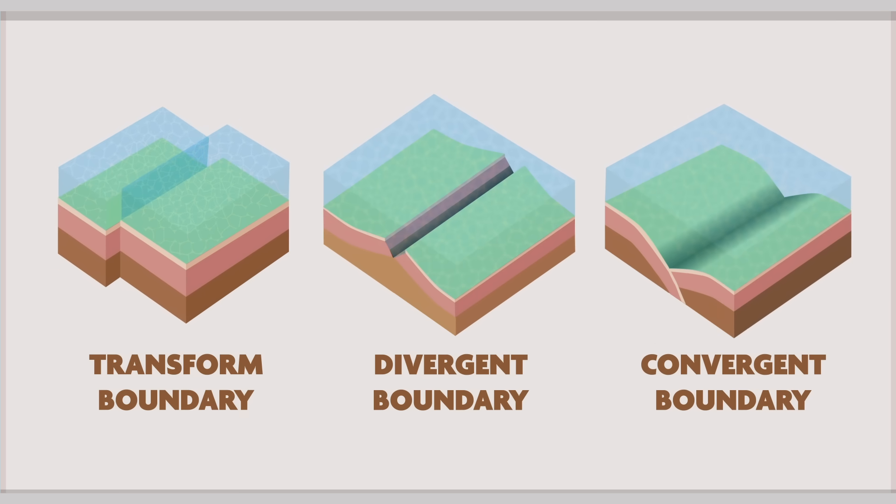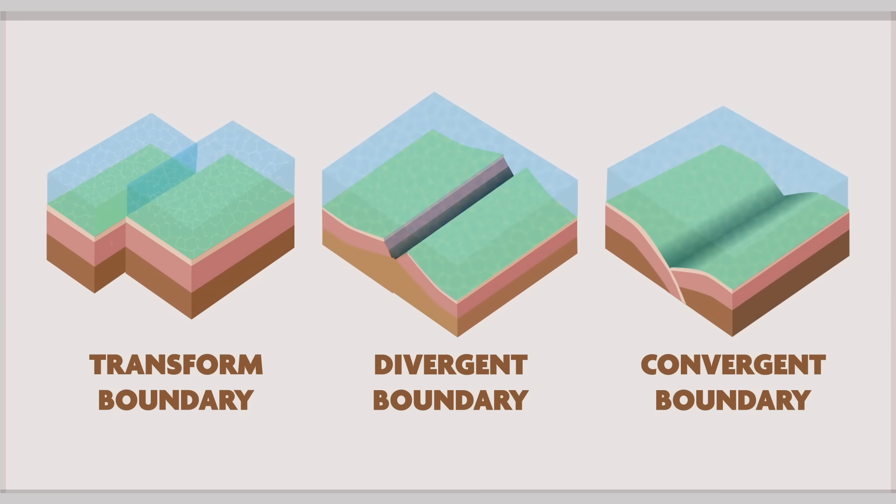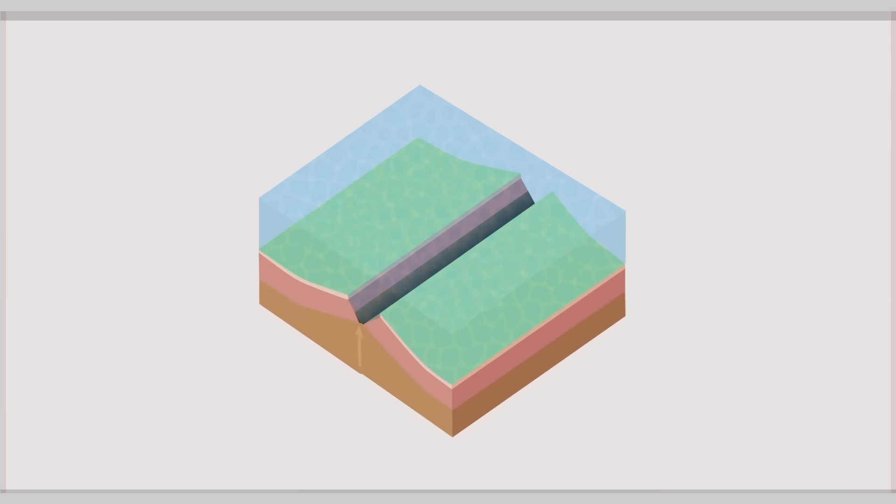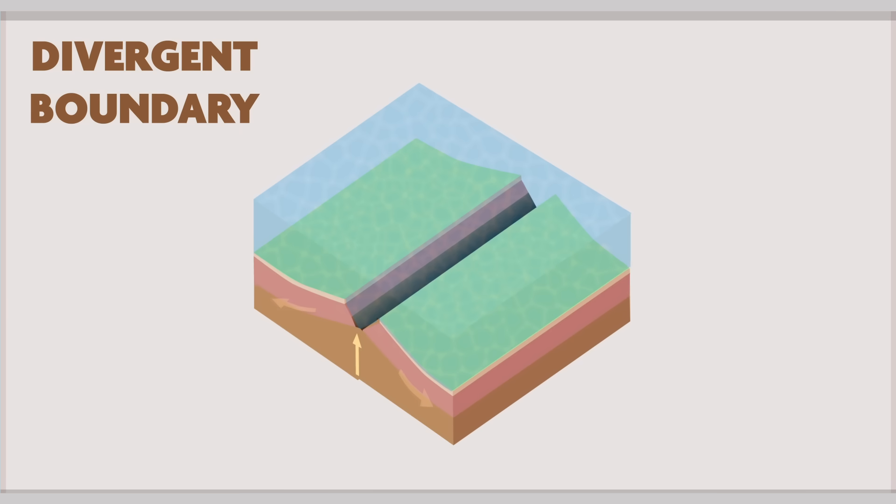In a transform boundary, two plates move horizontally to one another. In a divergent boundary, the plates move away from each other, while in a convergent boundary, the plates collide. Divergent boundaries are the result of rising convection currents in the mantle and are characterized by volcanic activity and shallow focus earthquakes that occur at relatively shallow points. Divergent boundaries also create V-shaped rift valleys and undersea mountain ranges. Iceland is an example of an undersea mountain range that has been pushed above the ocean surface.